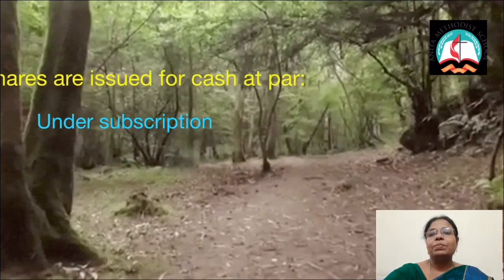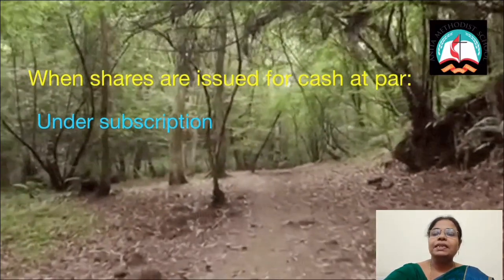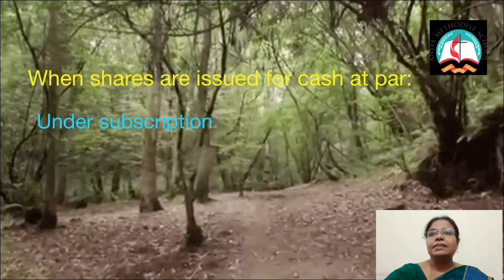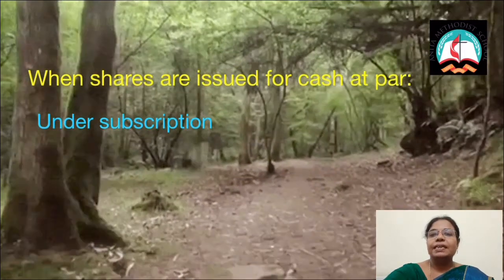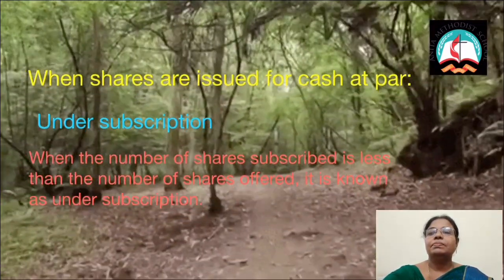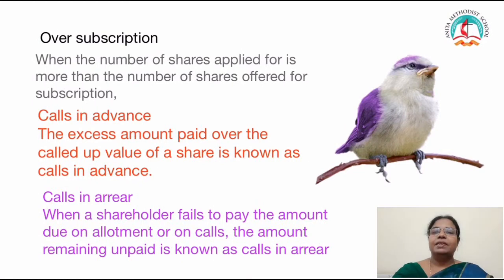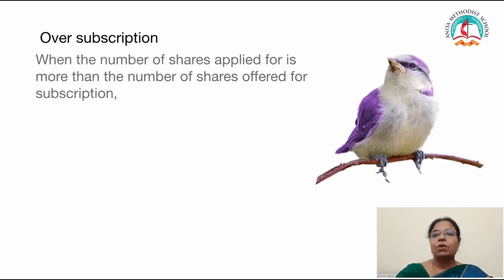The next one is about under subscription. When the number of shares subscribed is less than the number of shares offered, it is known as under subscription. Next we have studied about over subscription. When the number of shares applied for is more than the number of shares offered for subscription, it is called as over subscription.